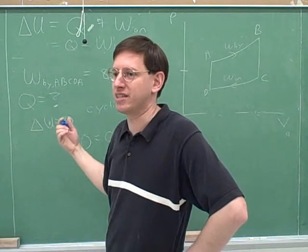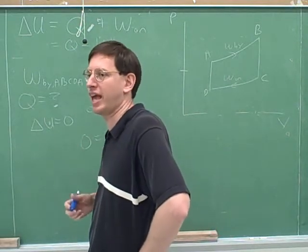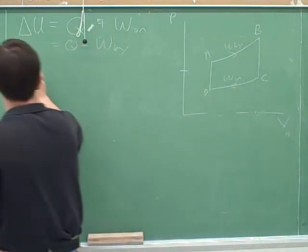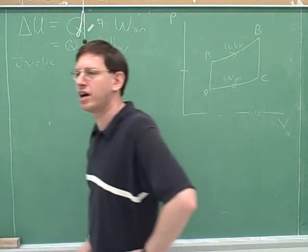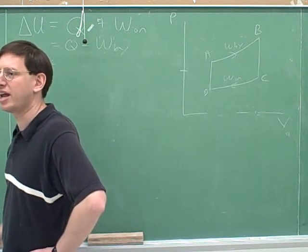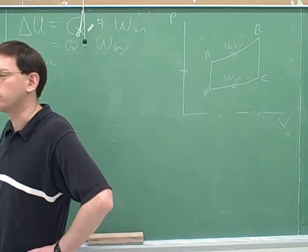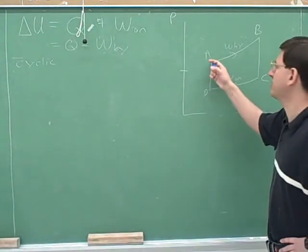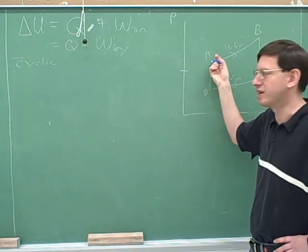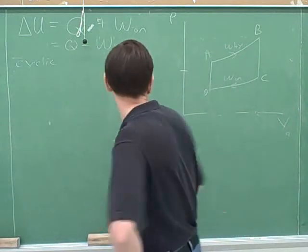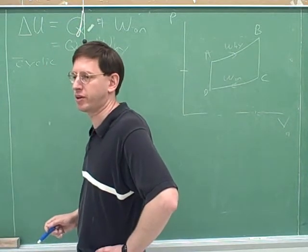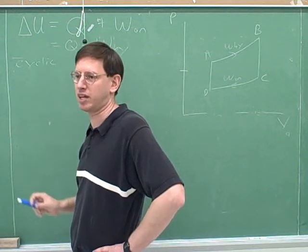Remember we're going through all the different special cases. We've seen isobaric and isochoric, and our new type is cyclic. How did we know isobaric? That gives a horizontal PV curve. How did we know isochoric? That was a vertical PV curve. So how do you know when you're doing a cyclic process? That's when the PV curve comes back to the same place it started — when the initial point is the same as the final point. This usually has multiple segments to come back on itself.